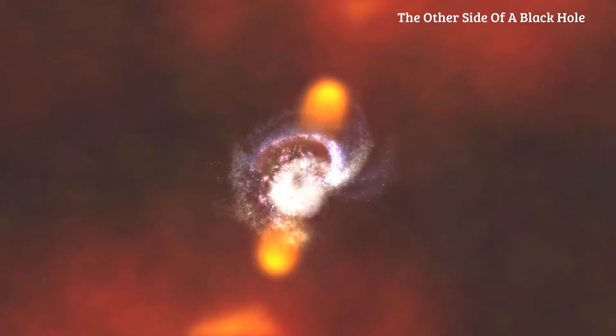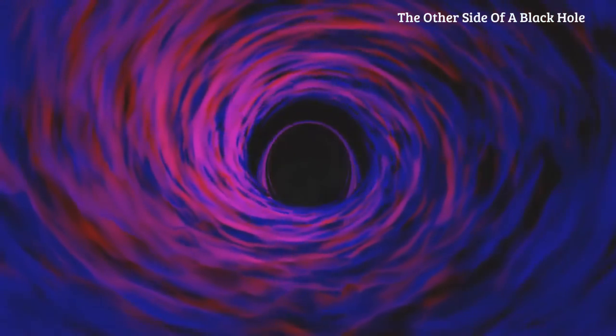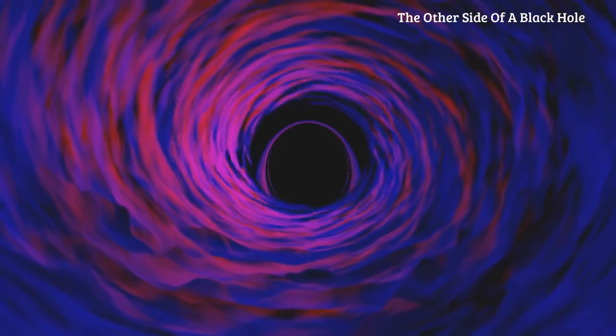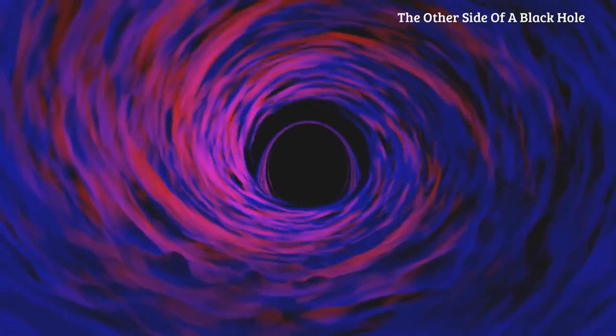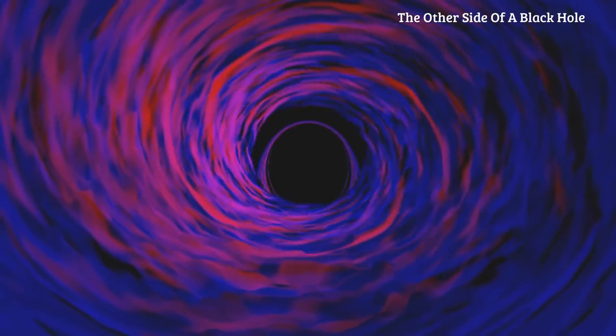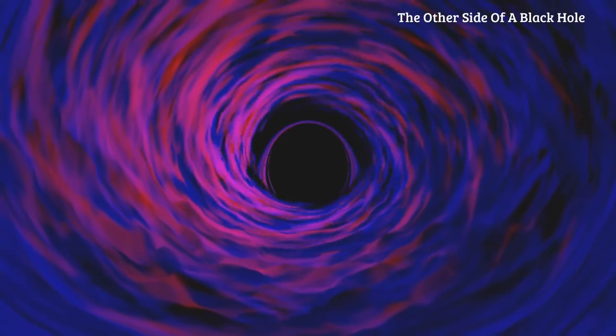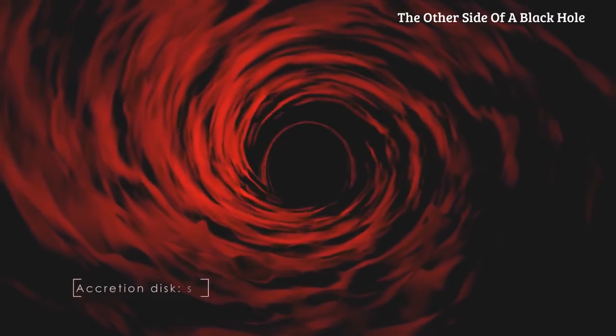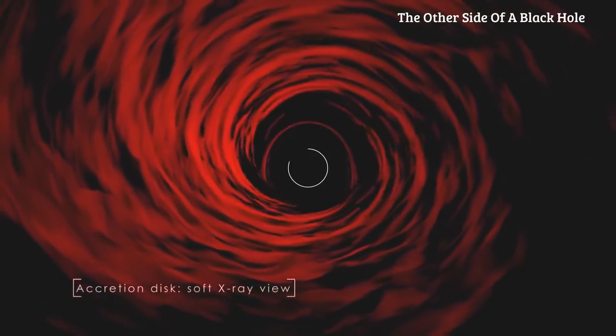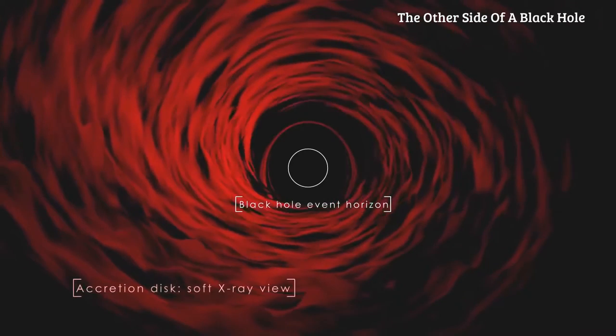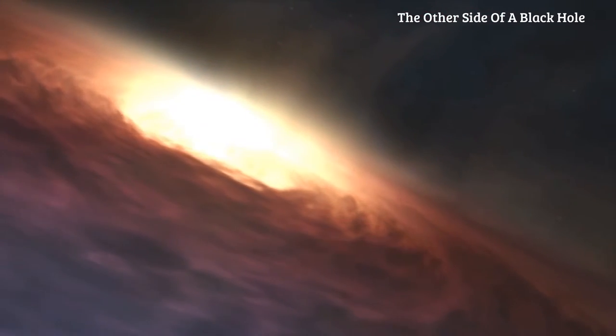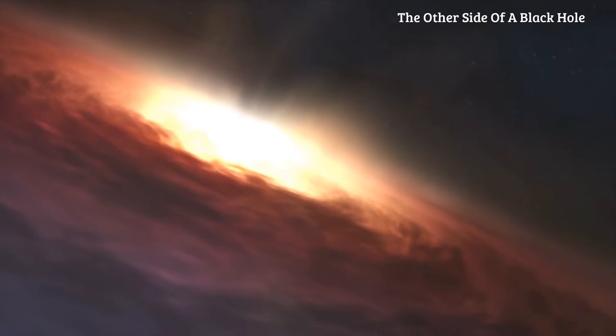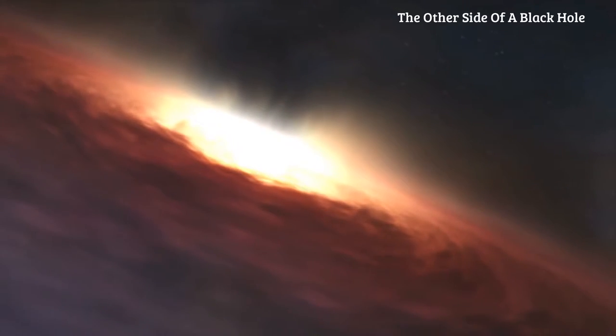The closer you get to a black hole, the higher the temperatures, ten million or more degrees. As a result, if you want to study the inner parts of the accretion disk, you have to look at high-energy gamma and X-rays. This inner region can be hot and bright enough to shine across the depths of space, becoming a quasar.